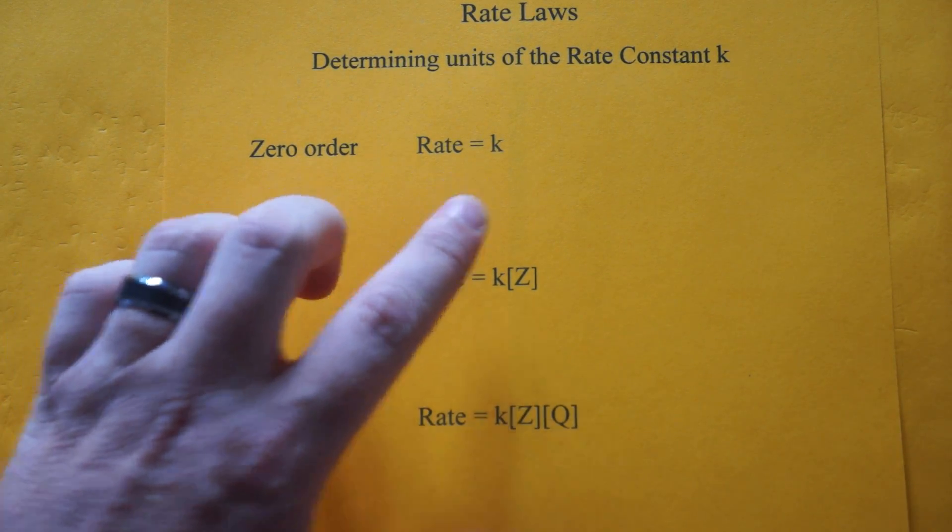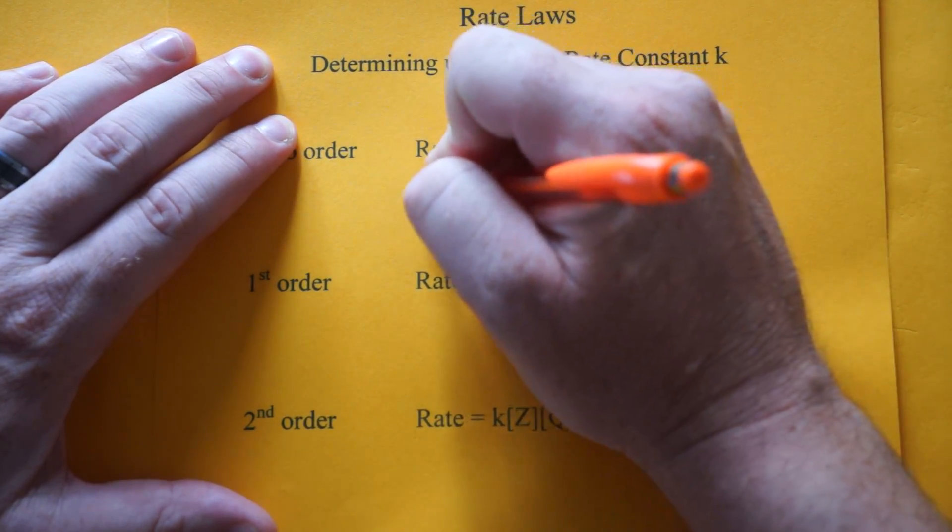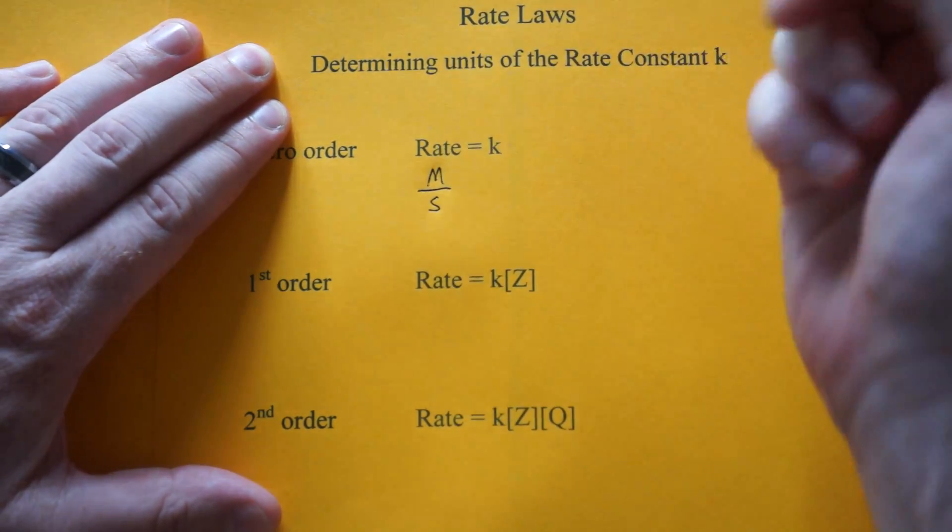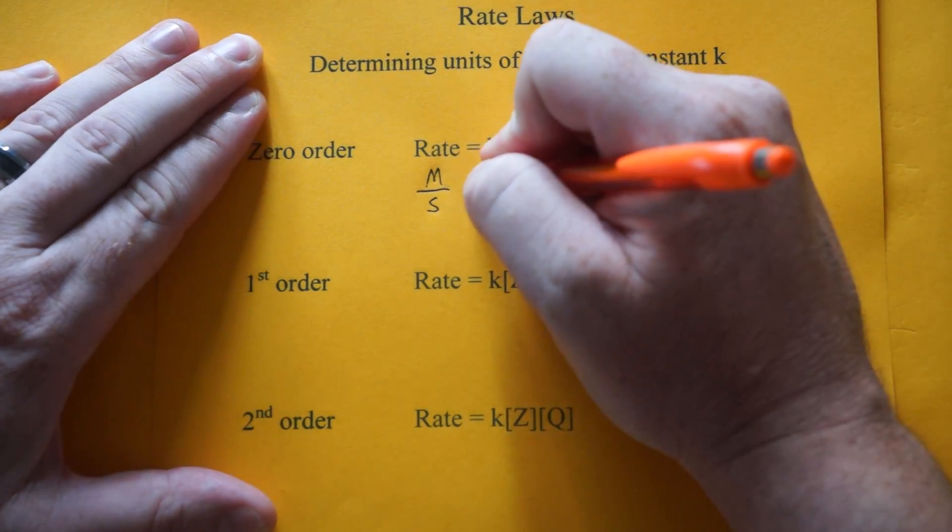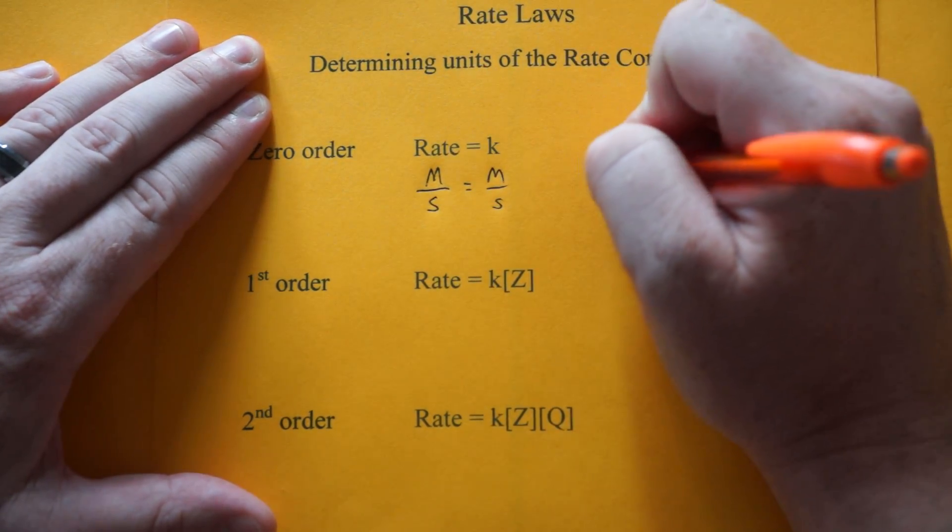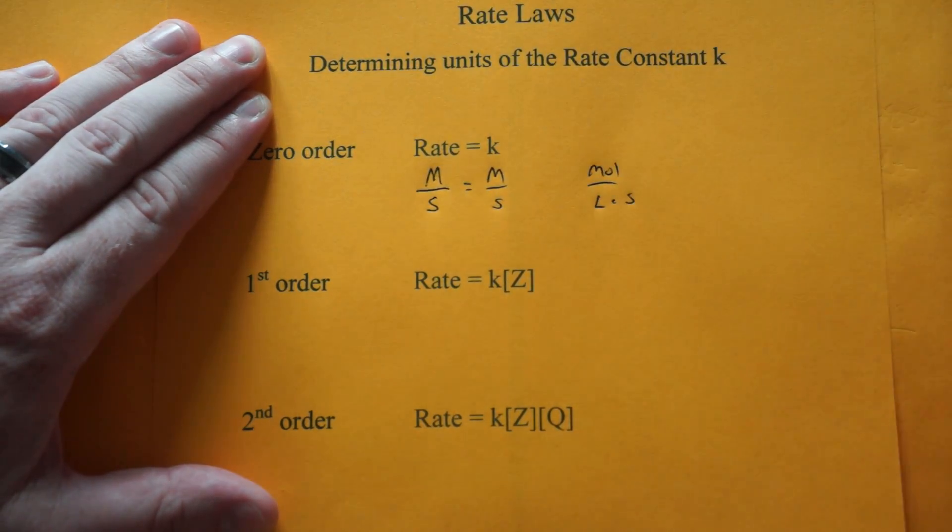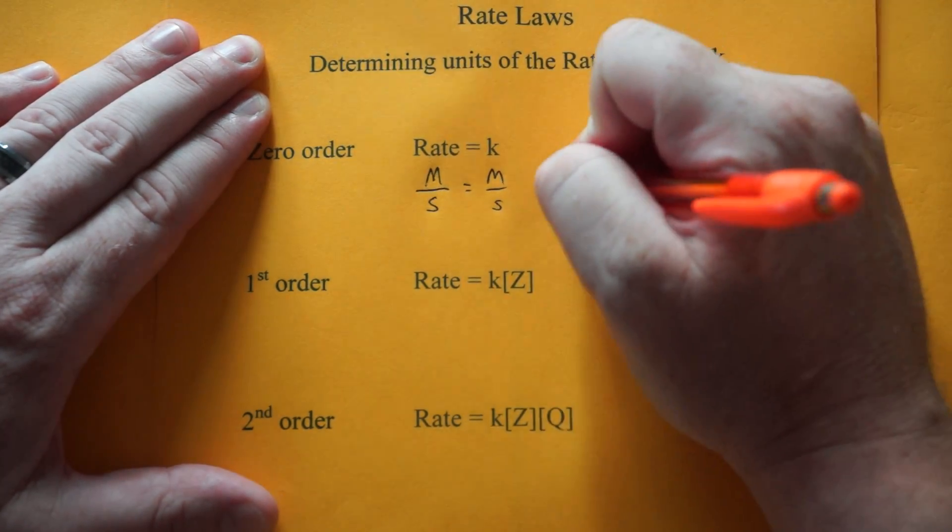We're going to start with a zero order reaction. You need to know that rate is actually the change in molarity over time. So I'm going to use seconds. It could be minutes, which means since it's zero order, k is molarity per second. Sometimes you may see molarity written as moles per liter, and then you throw in seconds in the denominator. So that's the units for k.